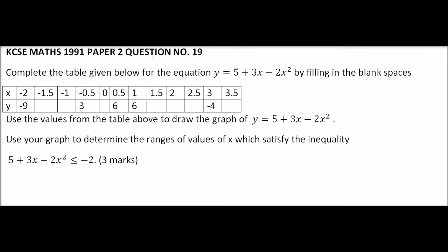Welcome to question number 19, Paper 2 of 1991 KCSE Mathematics. We are told to complete the table given below for the equation y equals 5 plus 3x minus 2x squared by filling in the blank spaces. We also need to use the values from the table to draw the graph, and then use the graph to determine the range of values for x which satisfies the inequality 5 plus 3x minus 2x squared is less than or equal to minus 2.